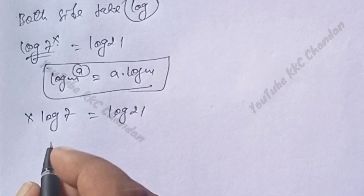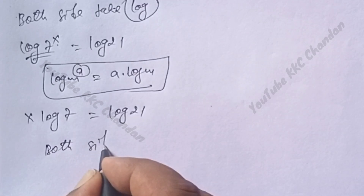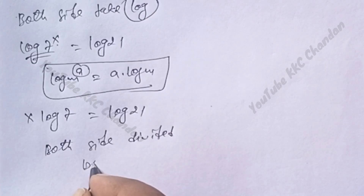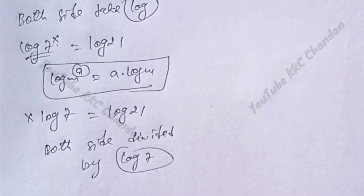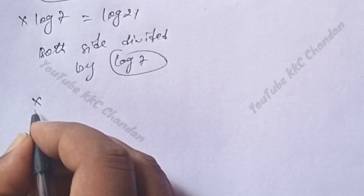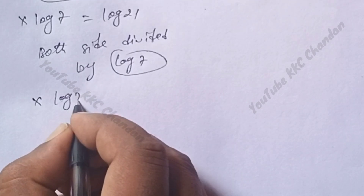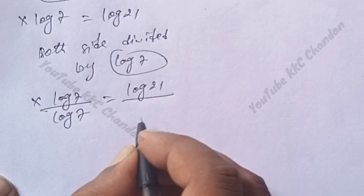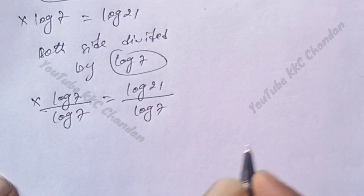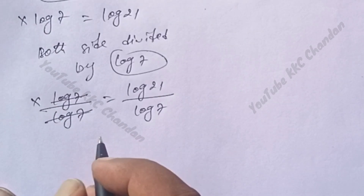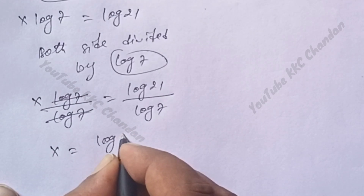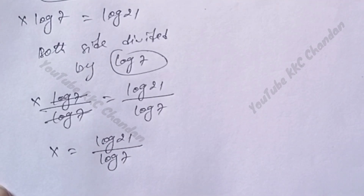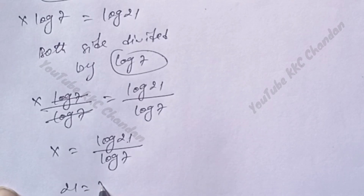Next, divide both sides by log 7. So x log 7 divided by log 7 equals log 21 divided by log 7. The log 7 cancels, giving x is equal to log 21 divided by log 7.